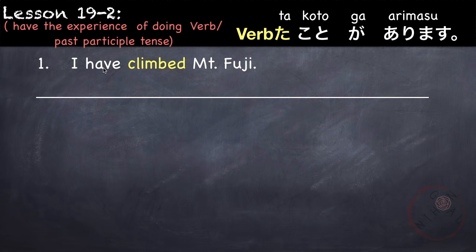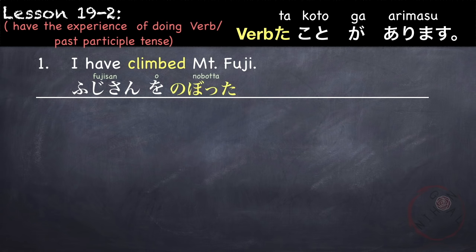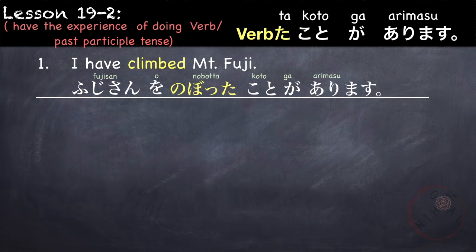For example, I have climbed Mount Fuji. Fujisan o — our verb is climb, which is noborimasu. In ta form, it is nobotta. Followed by koto: nobotta koto. So this makes the verb into a noun. Next is ga arimasu — so I have. Fujisan o nobotta koto ga arimasu. Literally, this means I have the experience of climbing Mount Fuji.